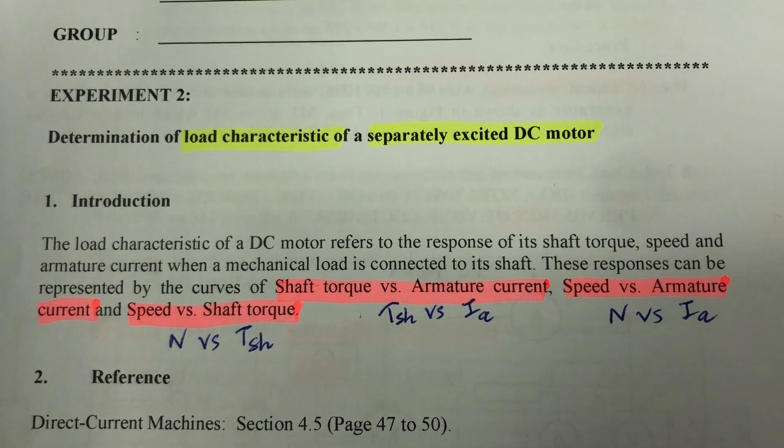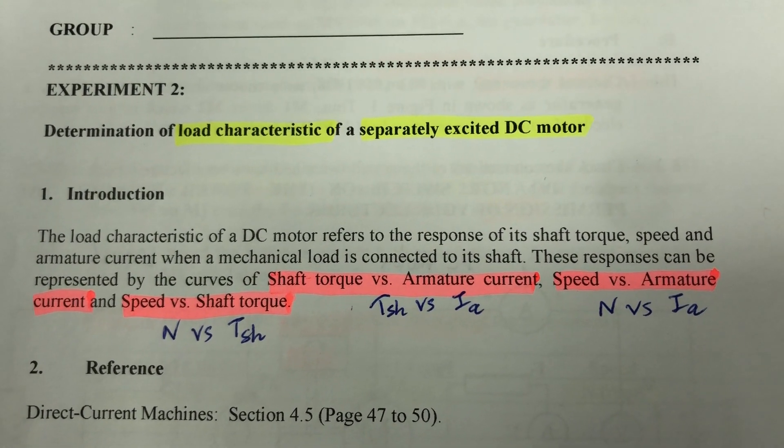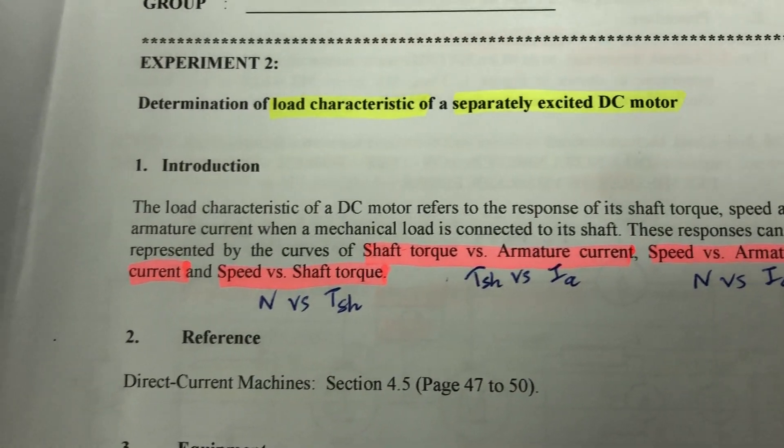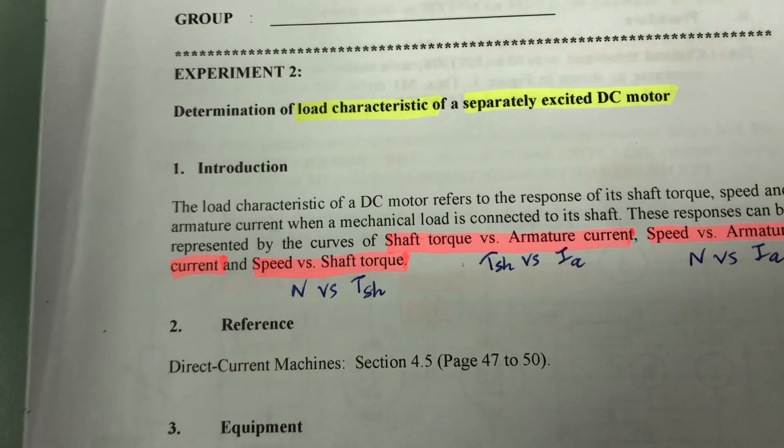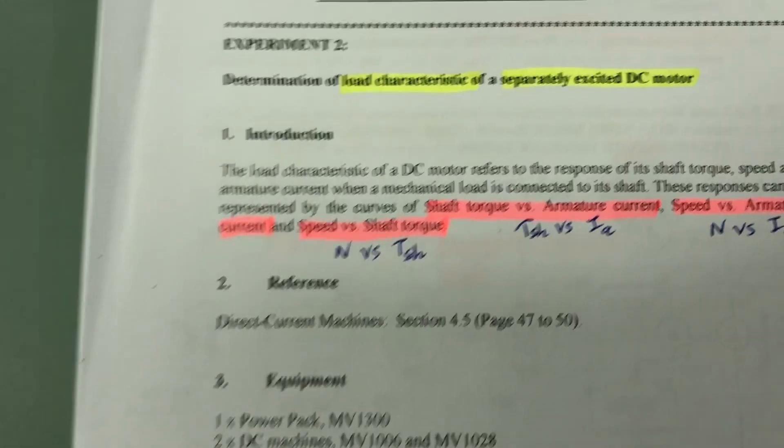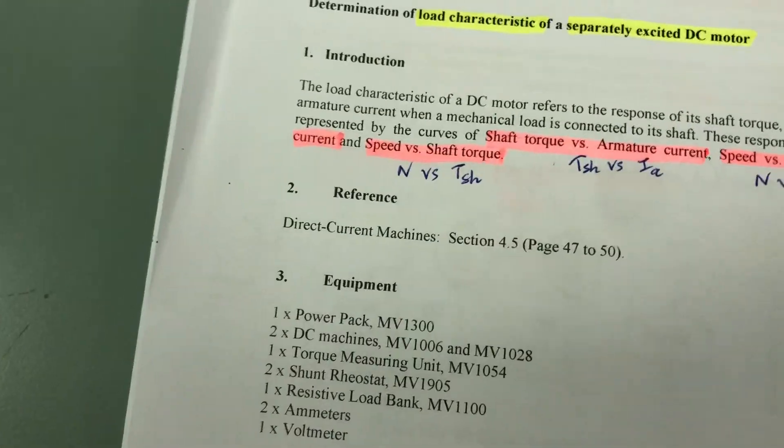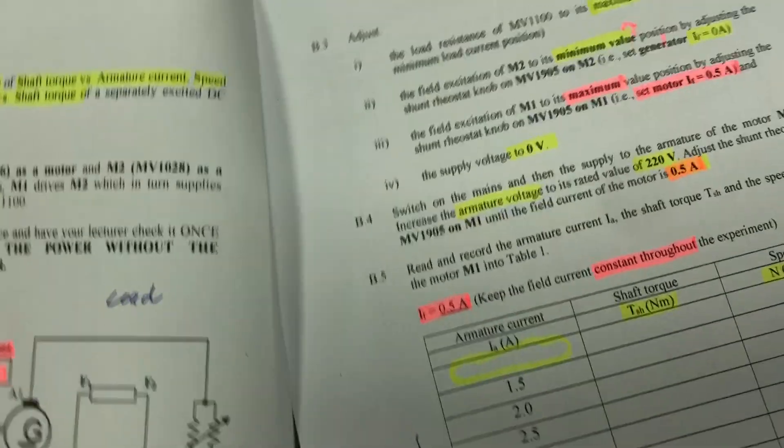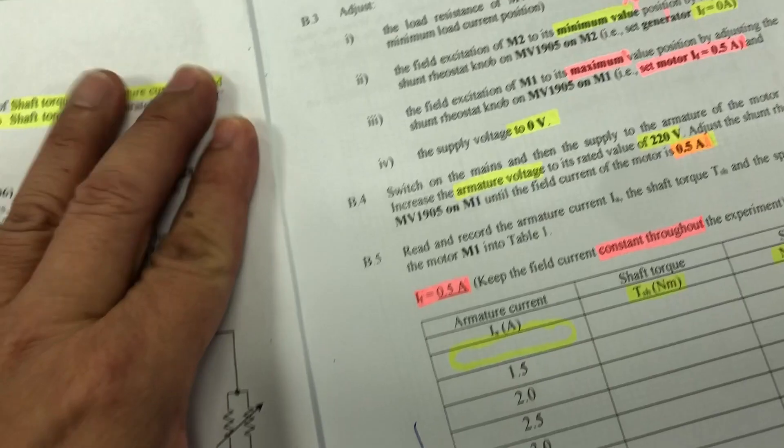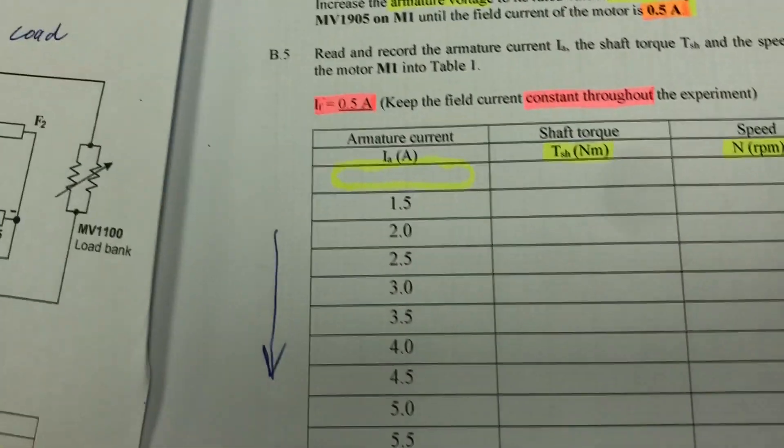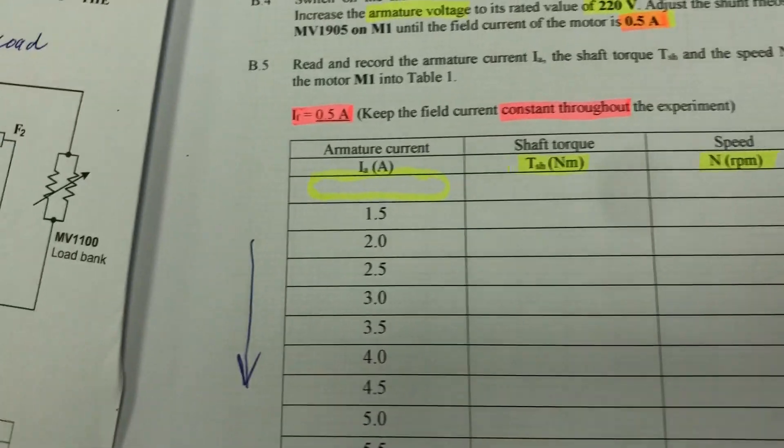Torque versus armature current, speed versus armature current, and speed versus the shaft torque. So we need to conduct this experiment to get all the data for us to plot the characteristic curves.